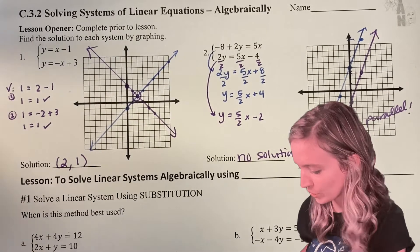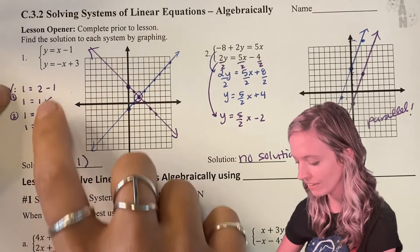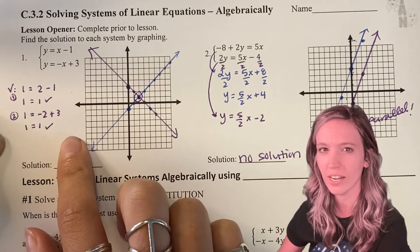How'd you do on that lesson opener? Check out the first one. I got (2, -1) as my intersection, so (2, -1) is my solution. I even checked it off to the side and it totally worked.